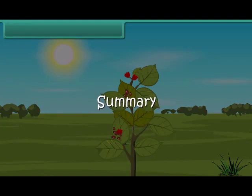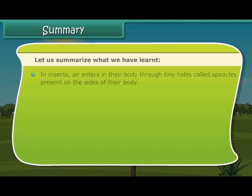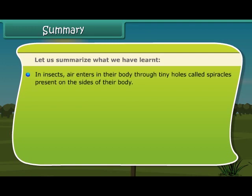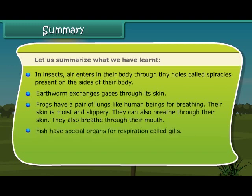Summary: In insects, air enters their body through tiny holes called spiracles present on the sides of their body. Earthworms exchange gas through their skin. Frogs have a pair of lungs like human beings for breathing; their skin is moist and slippery, so they can also breathe through their skin and through their mouth. Fish have special organs for respiration called gills.